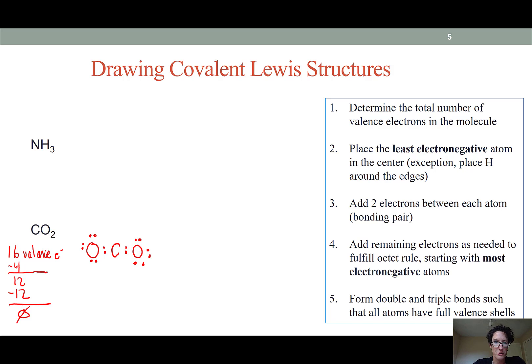Looking at our structure we have used up all of the electrons but we have a problem in that our carbon atom does not have a full octet. So we need to look at rule number five and form double and triple bonds such that all of the atoms have a full valence shell. We can't just throw electrons on carbon. They have to come from somewhere. The place they're going to come from is from the oxygens which are already bonded to the carbon.